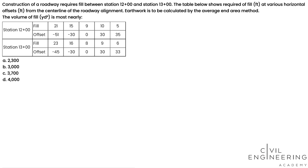Construction of a roadway requires fill between station 12+00 and station 13+00. The table below shows the required fill at various horizontal offsets from the center line of the roadway alignment, and the earthwork is to be calculated by the average end area method. The question is: what is the volume of the fill between these two stations?